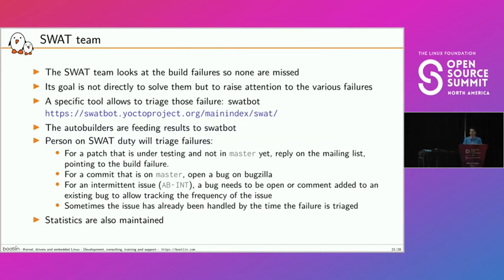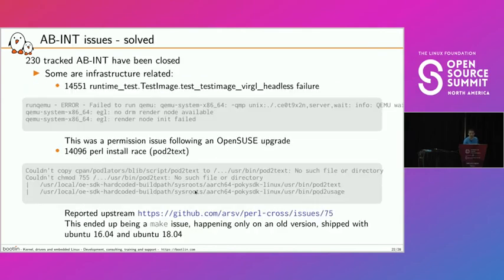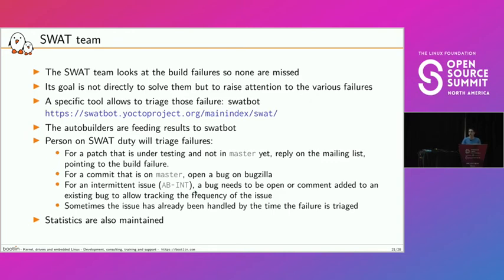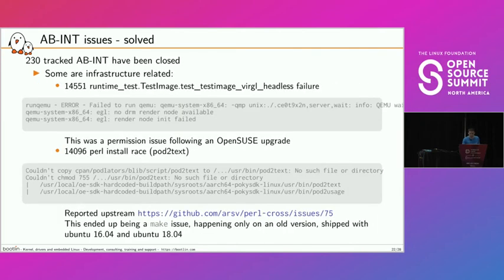The SWAT team looks at all build failures. Sometimes it's easy — a patch causes a failure, you remove it, done. But often we have intermittent issues (AB-INT issues). We track 230 closed issues. Some are caused by the infrastructure — for example, bug 14551: on OpenSUSE, a particular device was moved from one group to another, the builder wasn't in that new group, so we had to add that to the OpenSUSE setup.